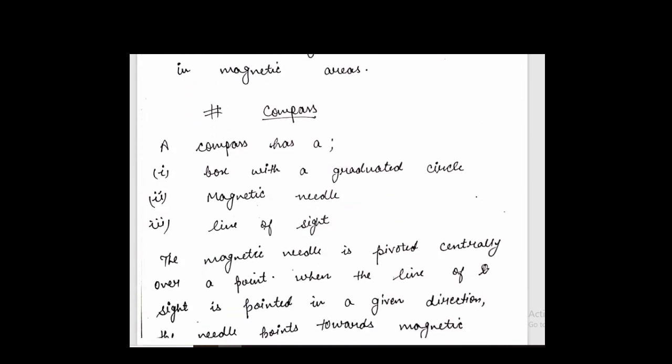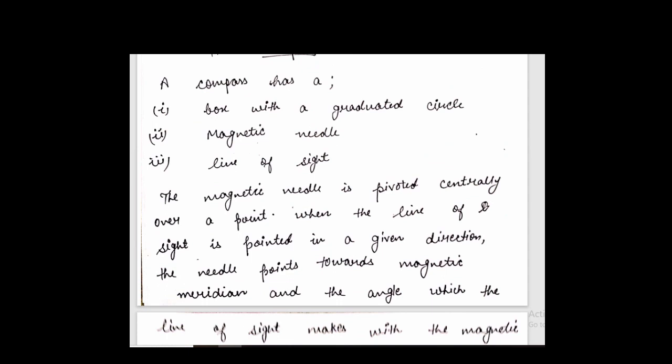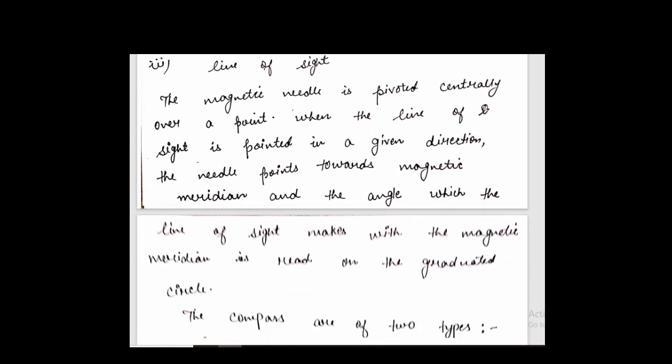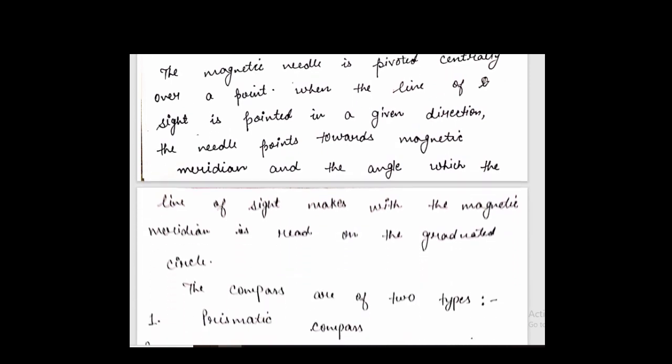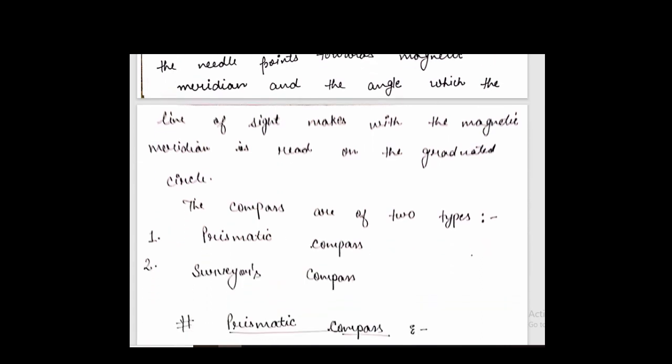Now, basically, what is the compass? The compass is a box of a graduated circle. It is a circular box with a magnetic needle. The magnetic needle is pivot centrally over a point. When the line of sight points to the given point, the needle points towards magnetic meridian, and the angle which the line of sight makes with the magnetic meridian is on the graduated circle. So the compass is basically two types: prismatic and survey compass.